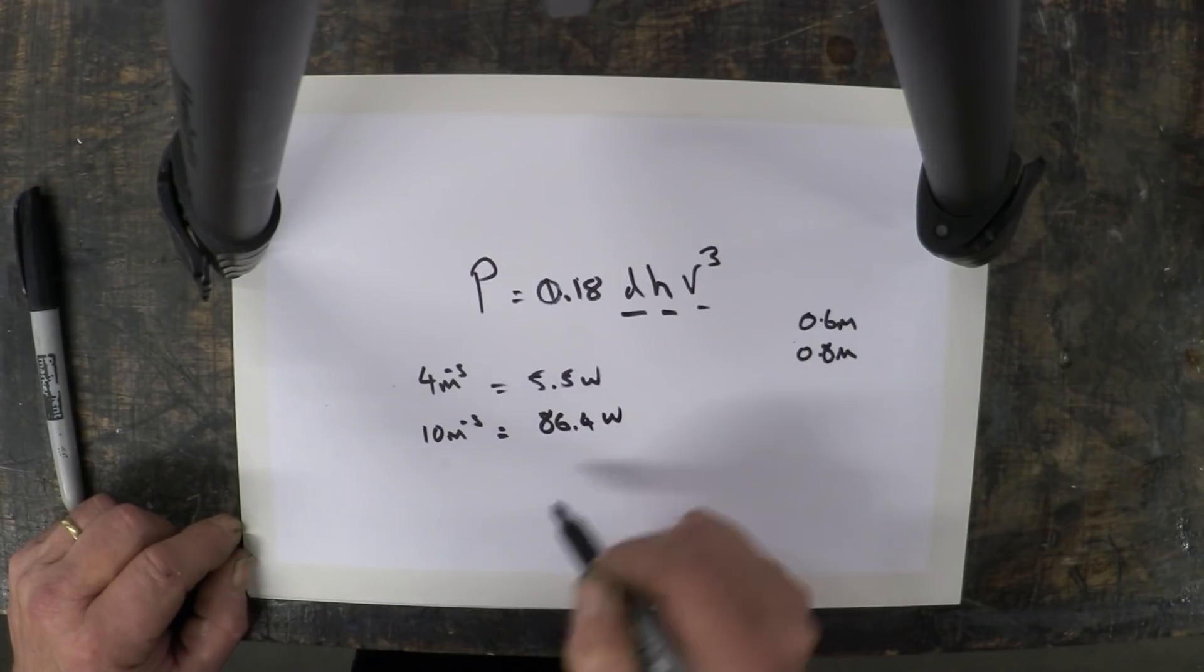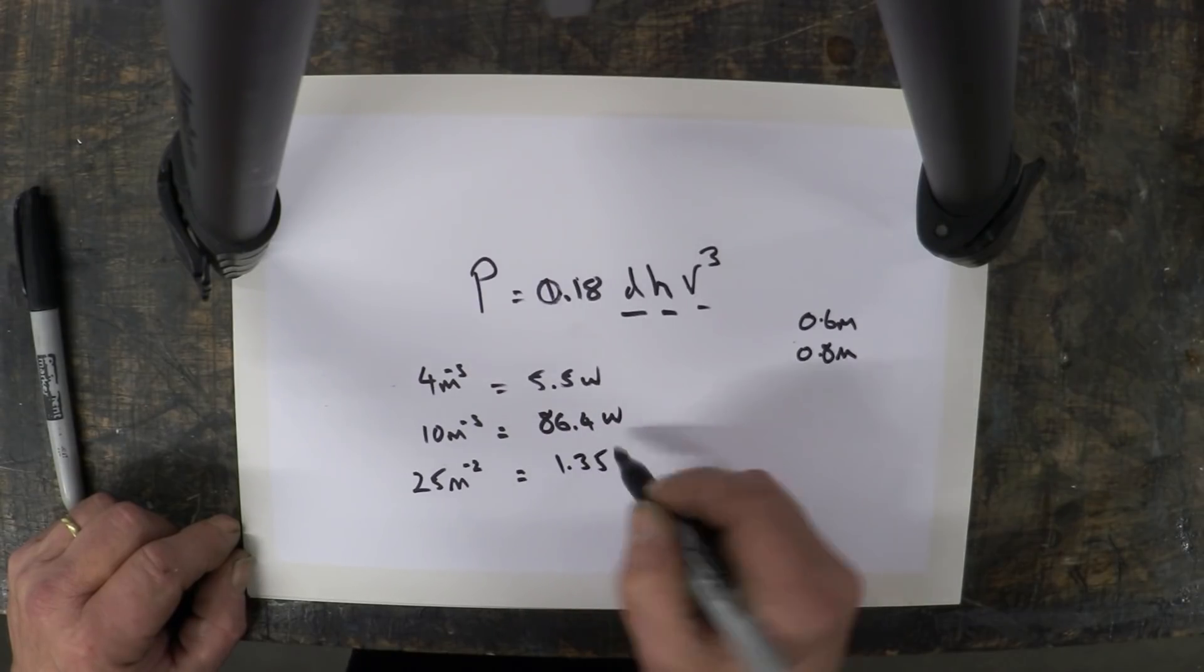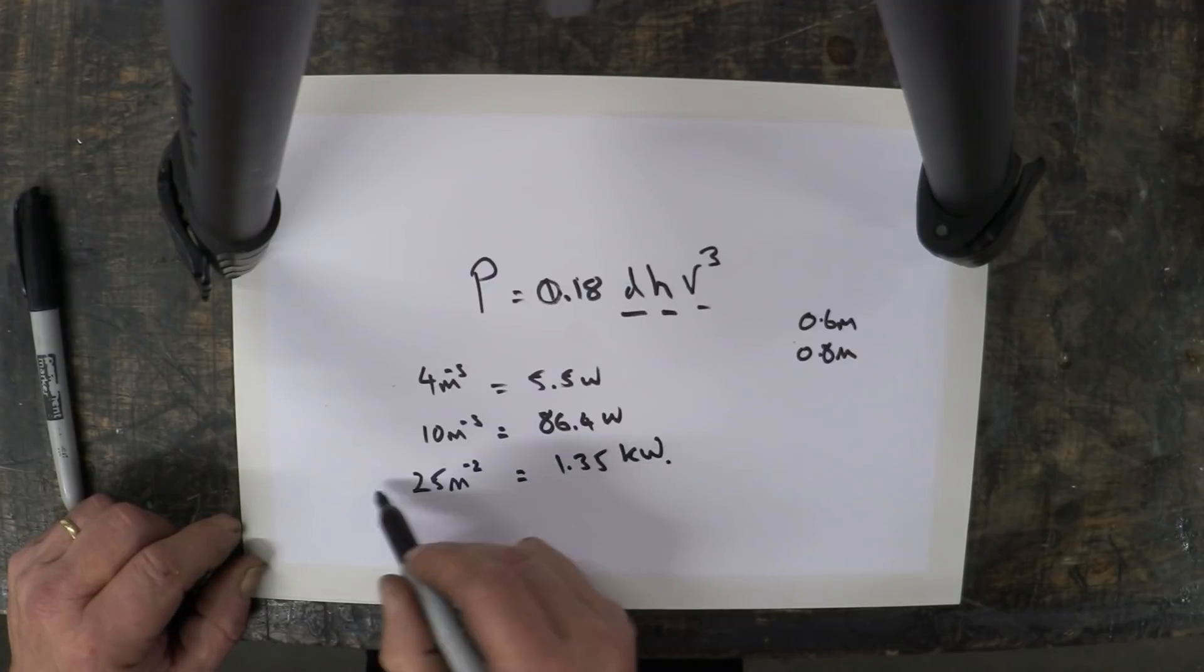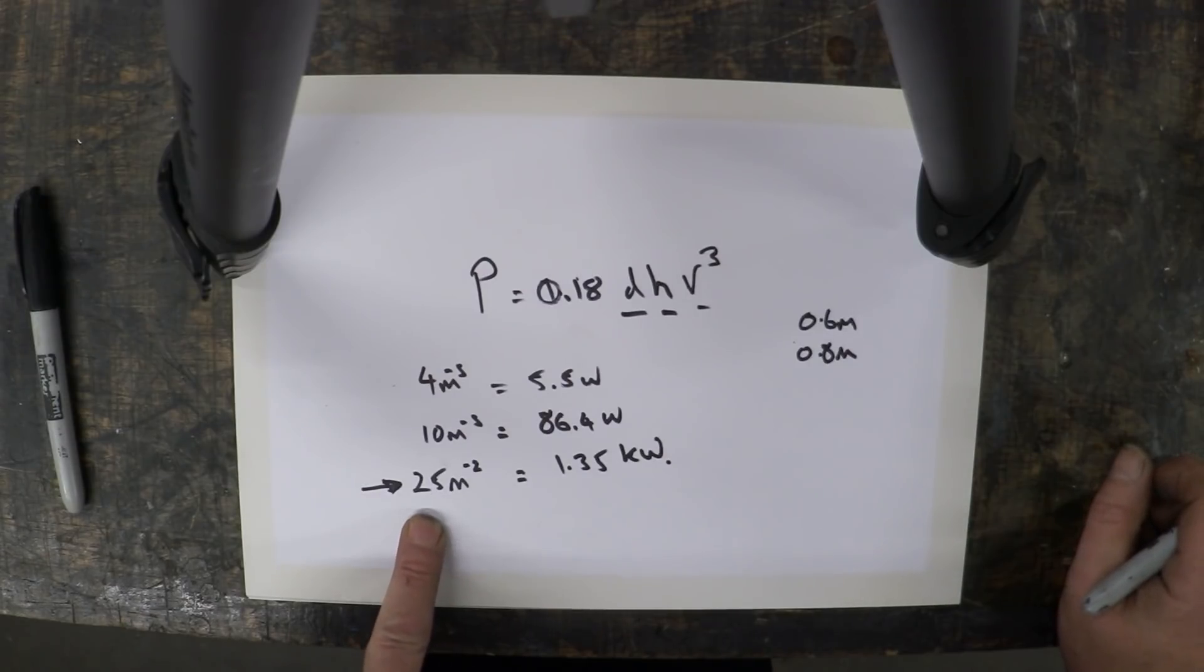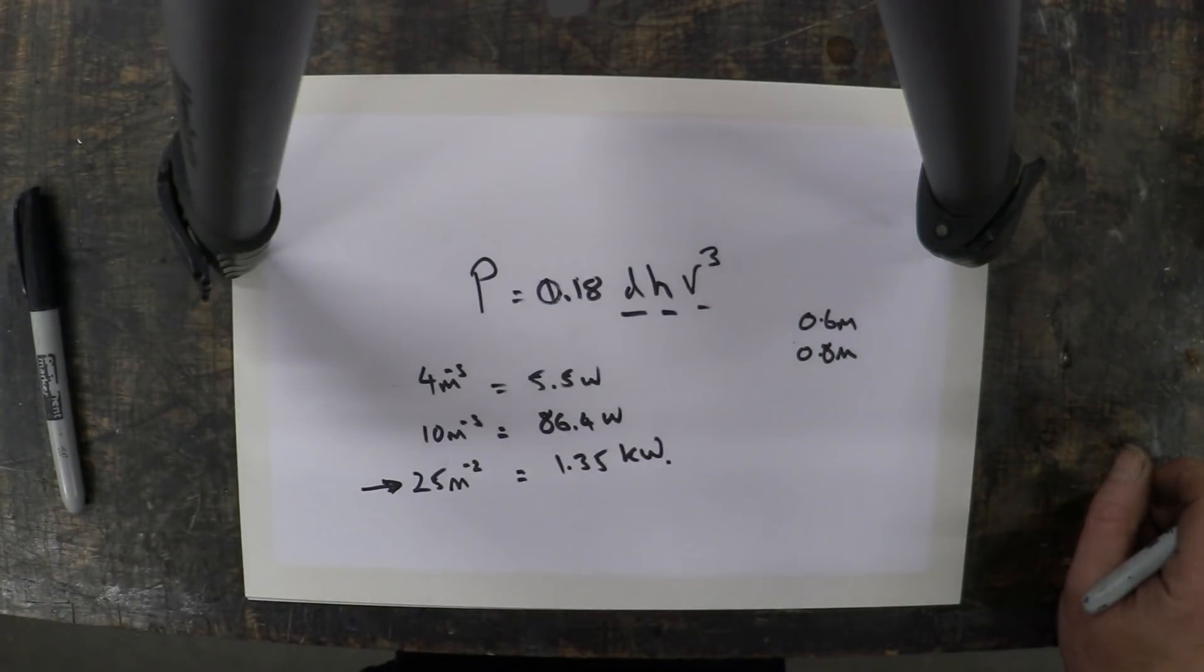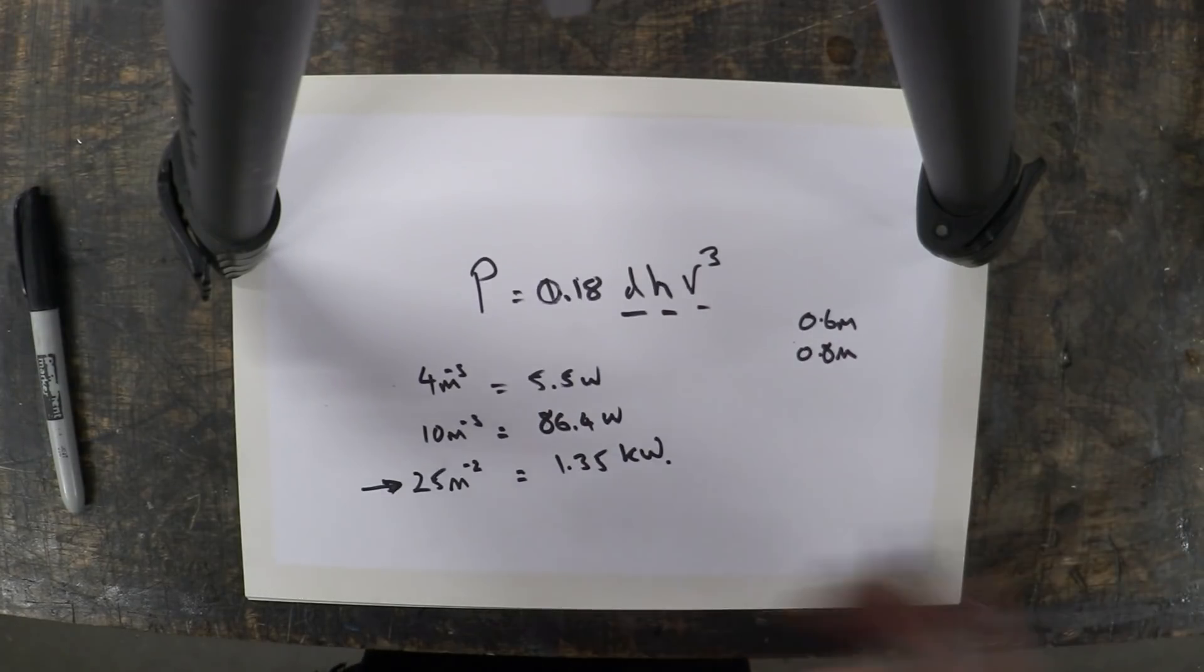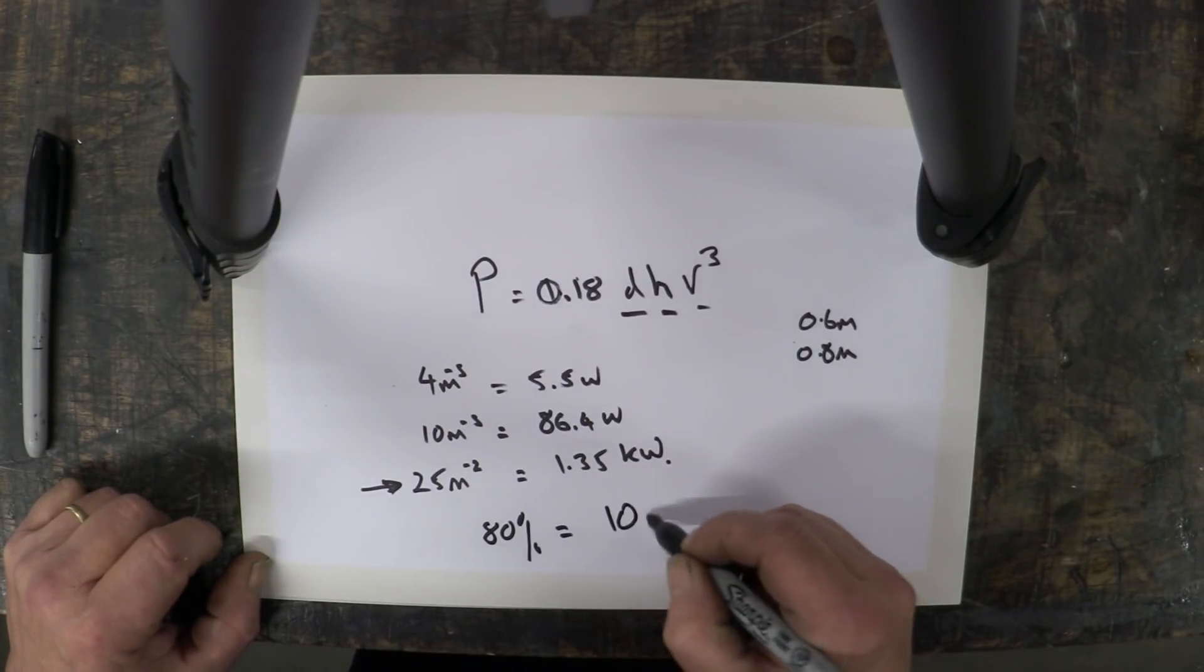Now this speed, 25 meters per second, it's the speed that commercial turbines are rated at. If you look at the power curves of commercial turbines rated at one kilowatt hour, you'll see that they give the speed at 25 meters per second to give you one kilowatt hour. Now obviously that is the maximum we can get out of it. Now most commercial turbines that you find in wind farms are somewhere between 75 and 80 percent efficient. So if we take 80 percent of that then we actually get 1080 watts or 1.08 kilowatts.